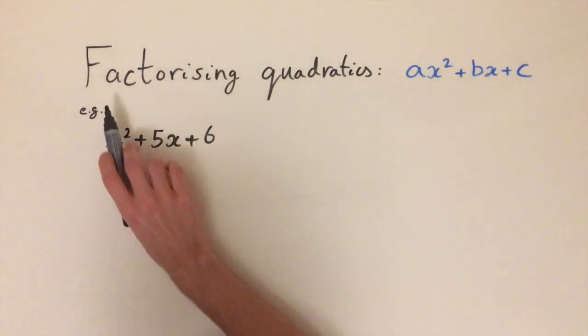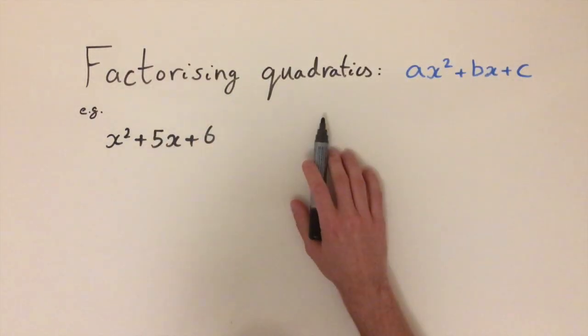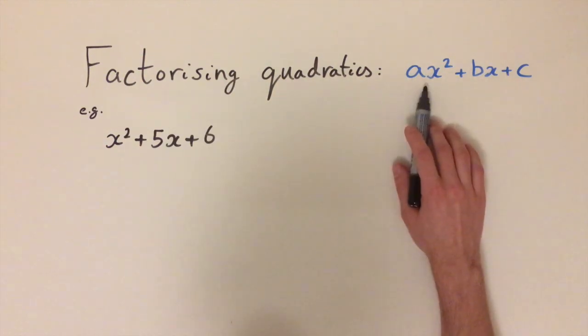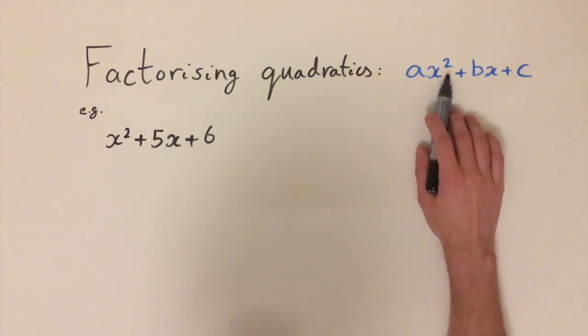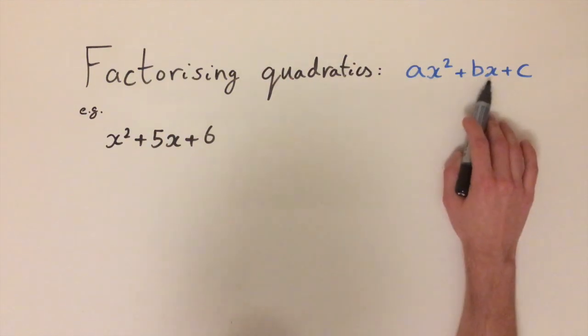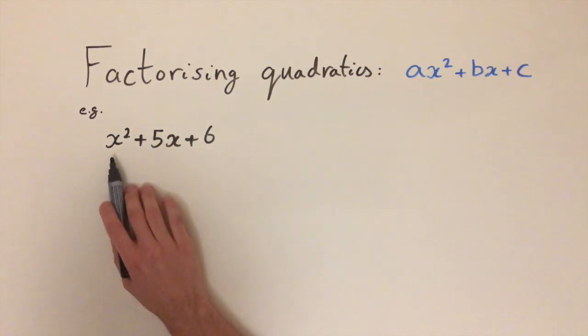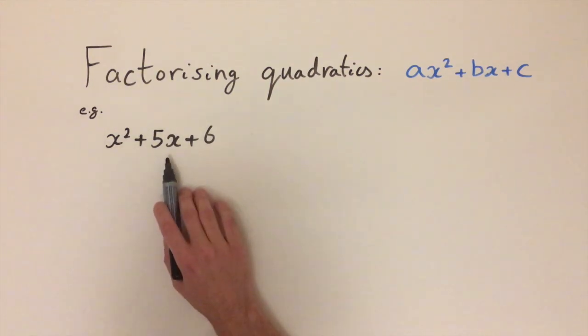In this video we're going to be looking at factorising quadratic functions. A quadratic function is a polynomial involving variables of powers up to 2, so x squareds, x's and constants. For example, we have a quadratic here: x squared plus 5x plus 6.